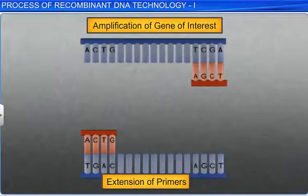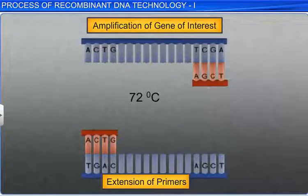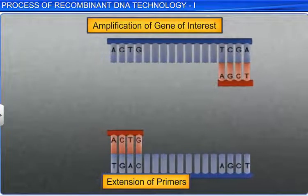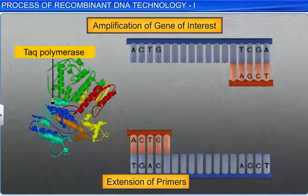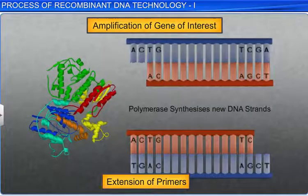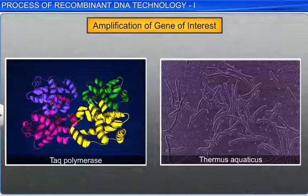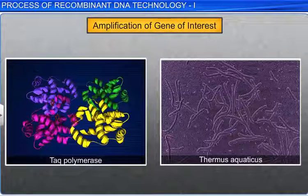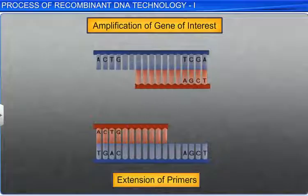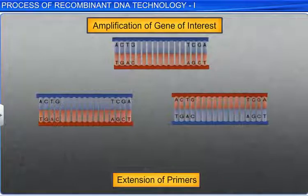In the third step, the temperature is raised again to 72 degrees centigrade. An enzyme called Taq polymerase is used to build two new strands of DNA using the original strands as templates. Taq polymerase is isolated from the bacterium Thermus aquaticus. It helps extend primers towards each other so that the DNA segment lying between the two primers is copied.